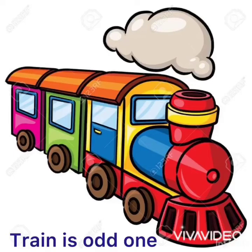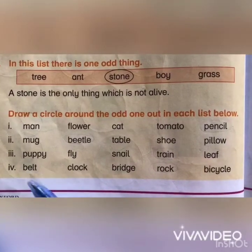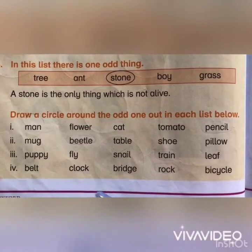Puppy, fly, snail, train, leaf — train is the odd one in this list. Why is train odd? Because it is a man-made thing. It is made of metal and plastic. But the rest of the things — puppy, fly, snail, leaf — are living things.